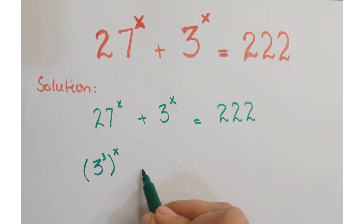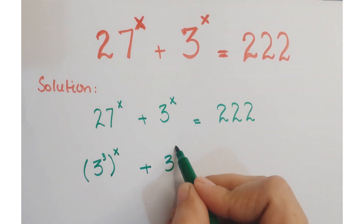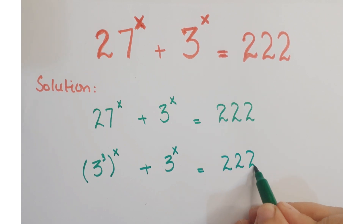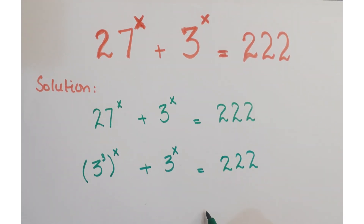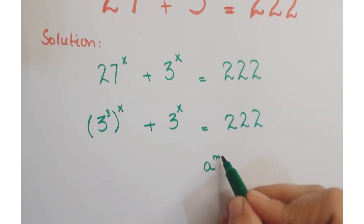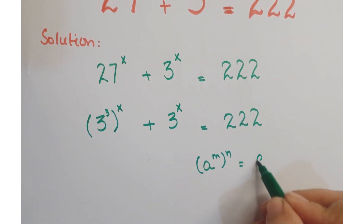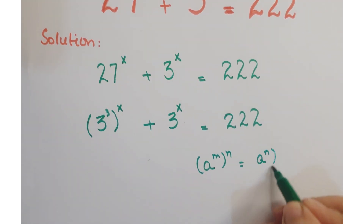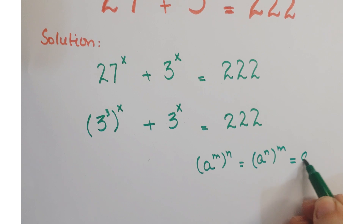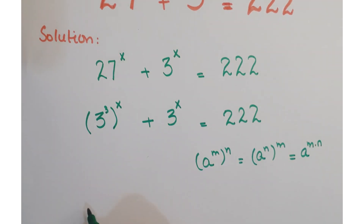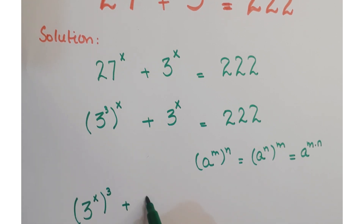So you can write 27 as 3 cubed. Further, as you know, a to the power m whole to the power n can be written as a to the power m into n. So we can write this as 3 to the power x whole cube plus 3 to the power x.